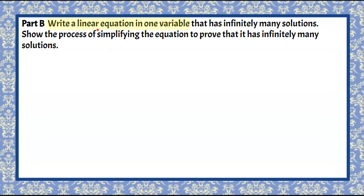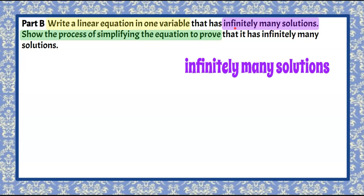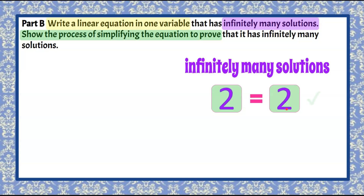Welcome back. We're going to write a linear equation in one variable with infinitely many solutions, and we also have to show the process of simplifying to prove it. Let's begin by understanding what infinitely many solutions means: after simplifying or solving for X, we're going to have a statement of fact that's true — something is going to equal something. If you follow the algebraic process, you'll end up with a true numerical statement, like 2 is equal to 2.